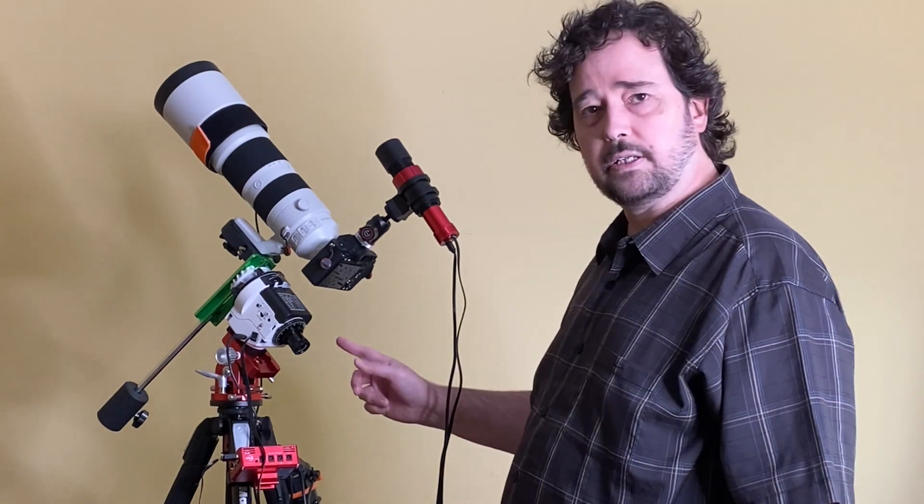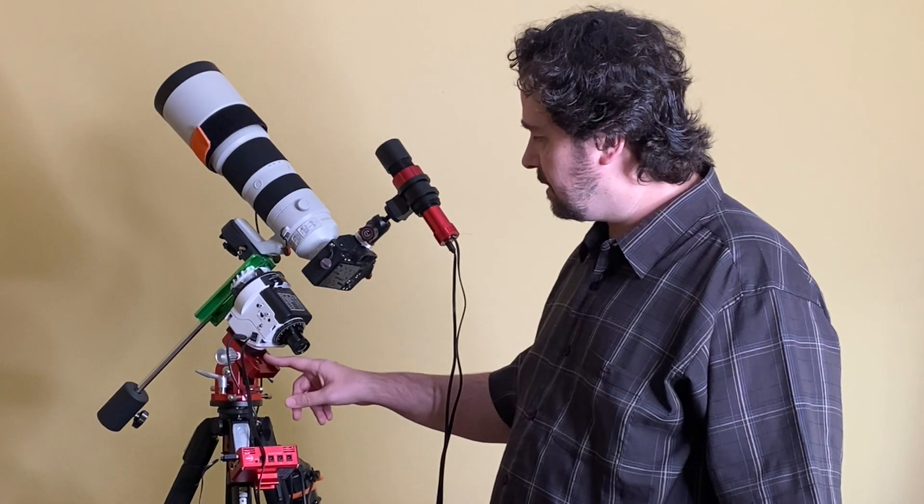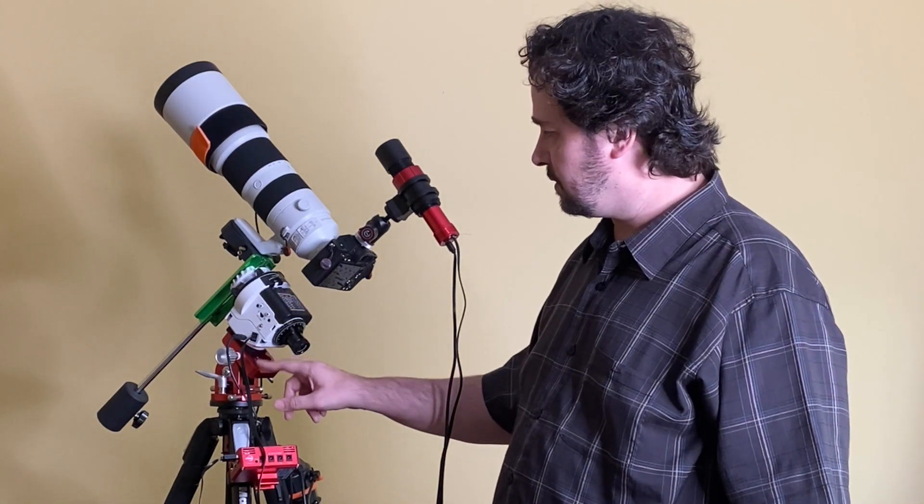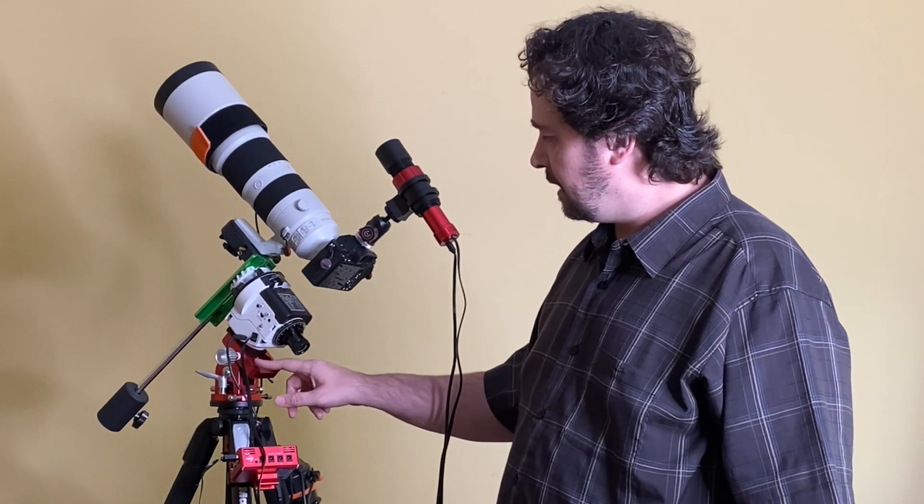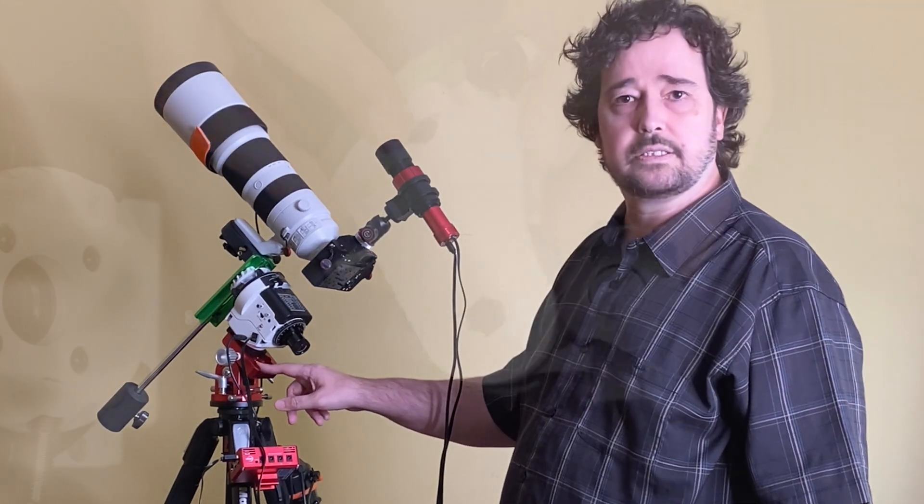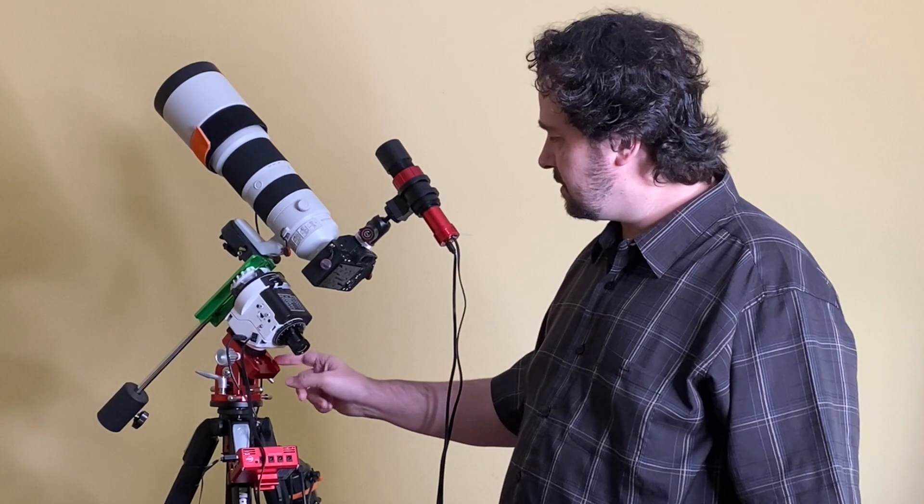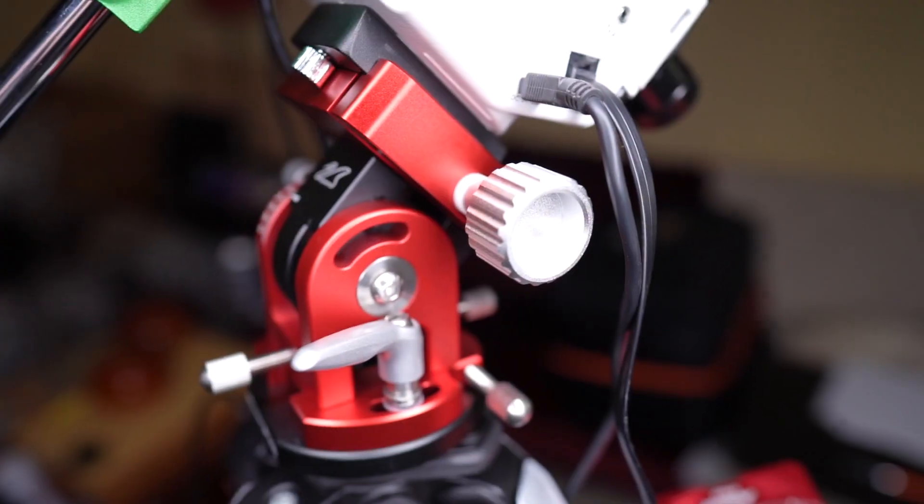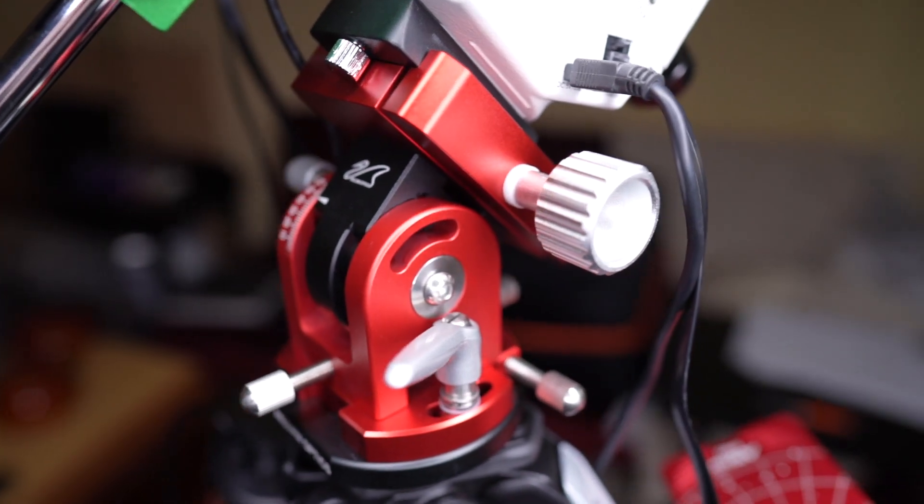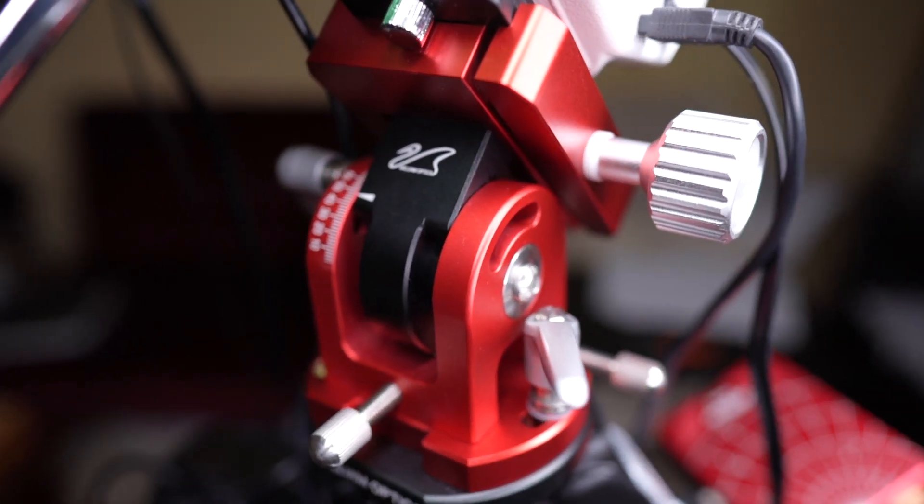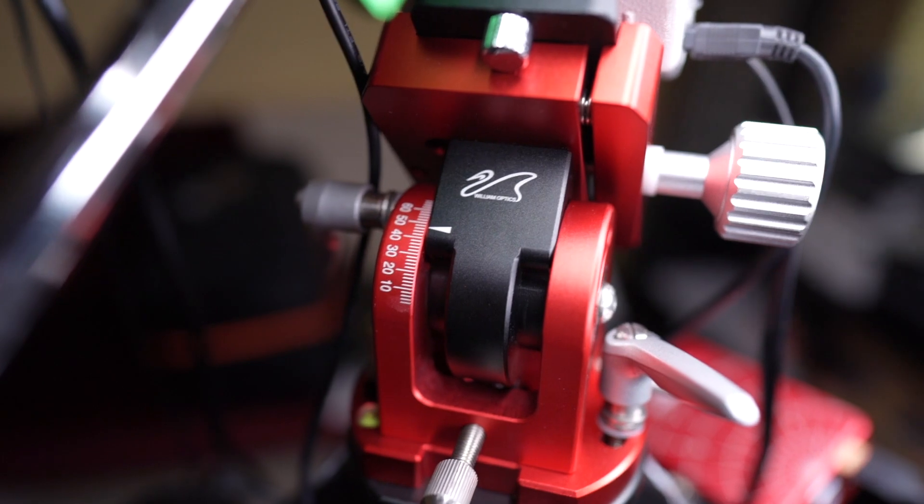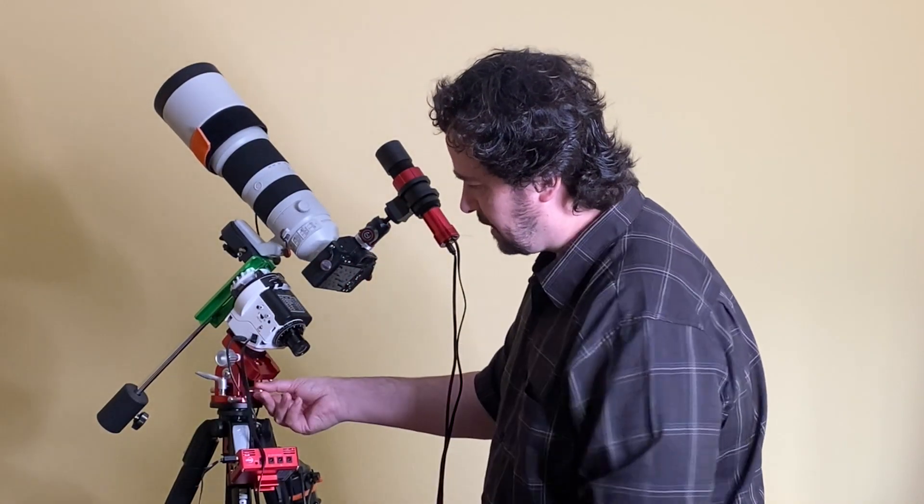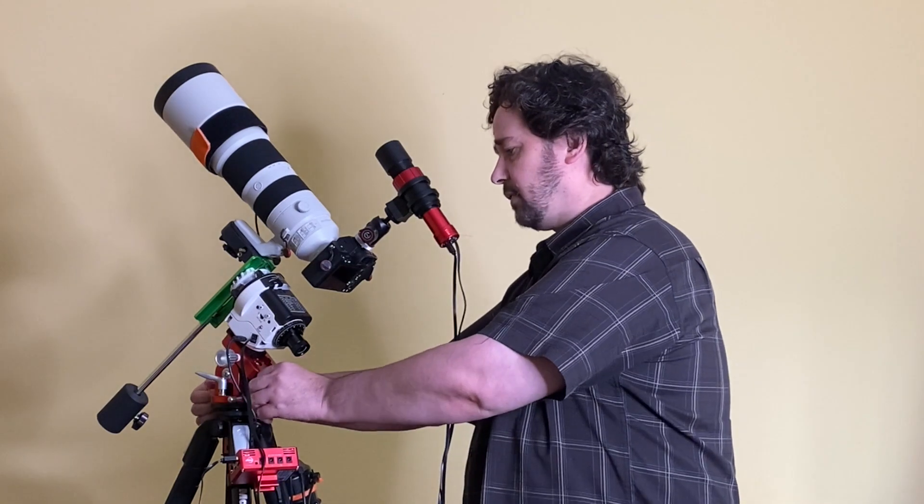Another thing that I found while trying to do super accurate polar alignment is that the equatorial mount that came with the Sky Watcher Star Adventurer, the Sky Watcher version, is not the best. It's pretty good, it's pretty solid, but this thing from William Optics is a replacement for it and it is extremely rock solid. It is super precise, precision milled aluminum. Everything about it is super precise.